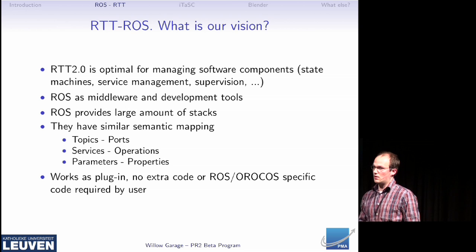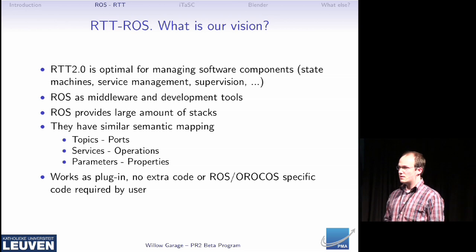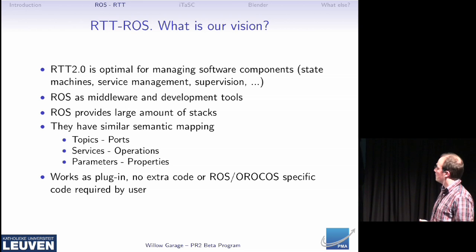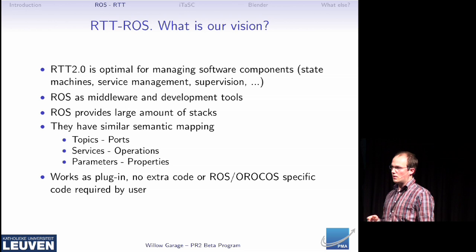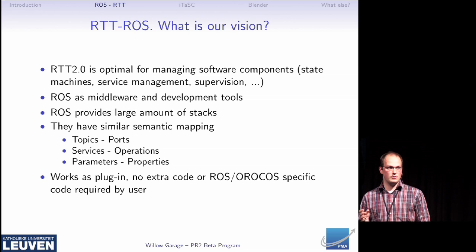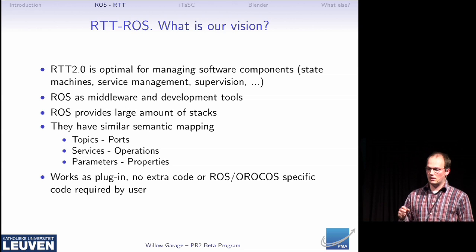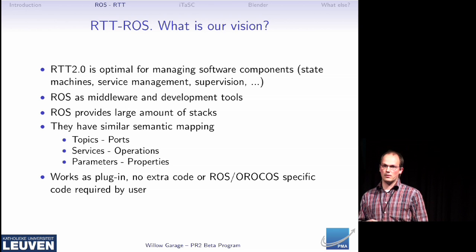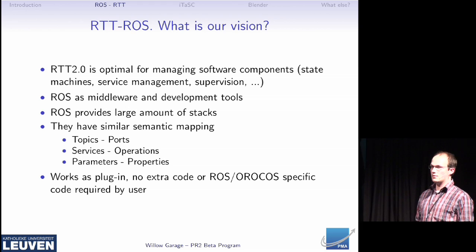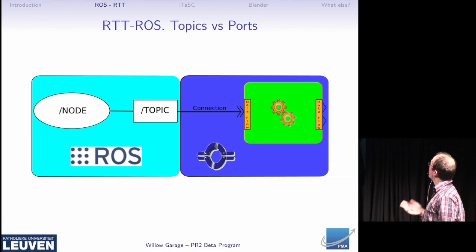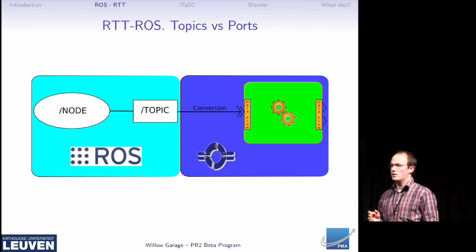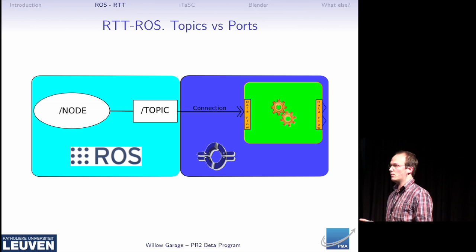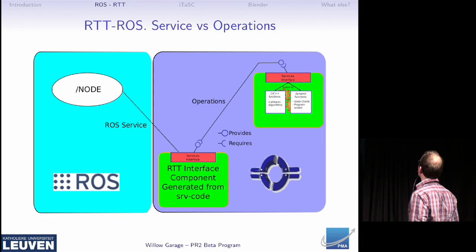They have the same semantic mapping. What are ports in Oricos are called topics in ROS. What we call services in ROS are called operations in Oricos, and parameters and properties are all the same. We want it to work like a plugin so that the user has no overhead, that the ROS data types are also available in Oricos and are created for the user automatically. For a node and a component, it's very easy — the topic can directly connect to the data flow of the component.